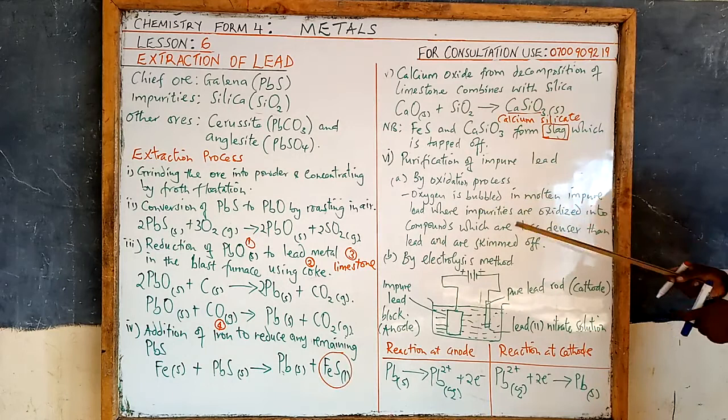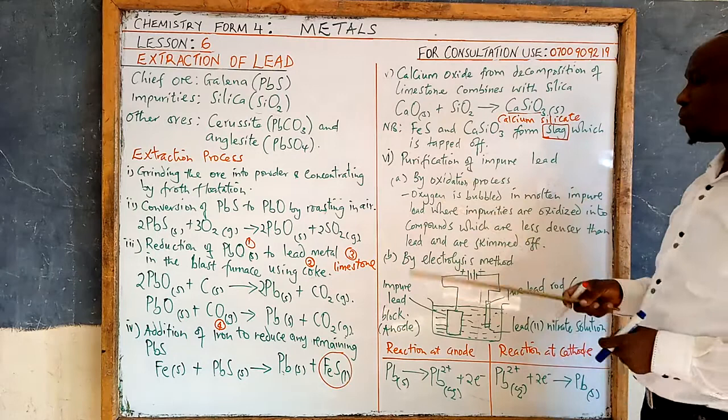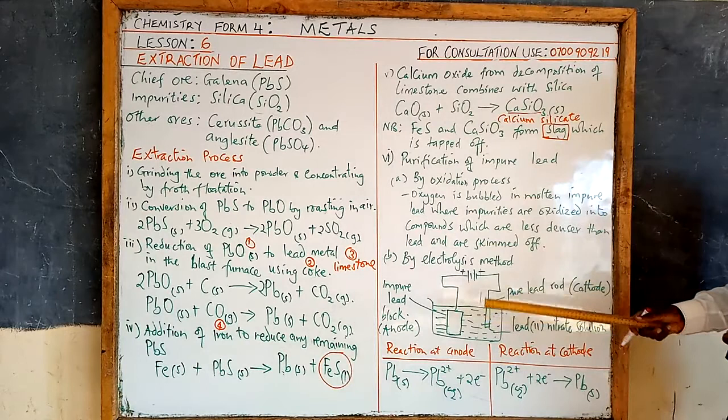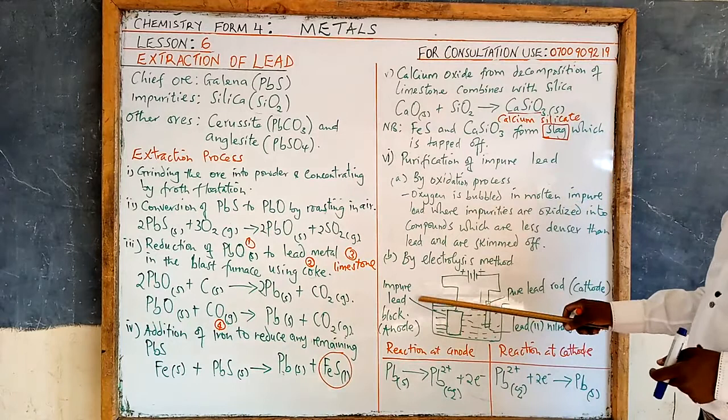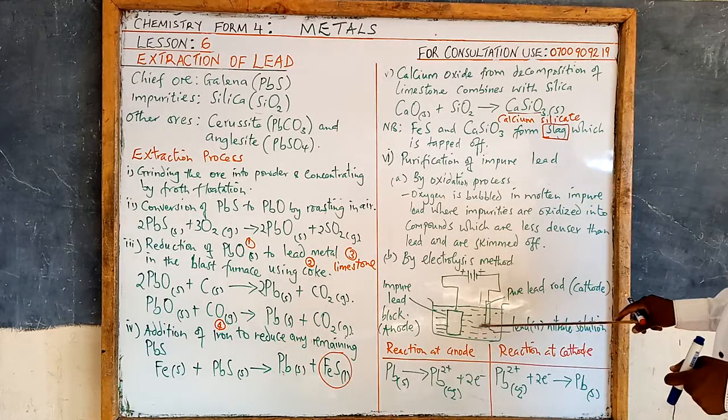In the oxidation process, oxygen is bubbled through molten impure lead, where the impurities are oxidised into compounds which are less dense than lead. The impurities are then skimmed off. The other method to purify lead is by the electrolysis method, where you set up your electrolysis cell with the impure lead as the anode and pure lead as the cathode. The electrolyte used is lead(II) nitrate solution.